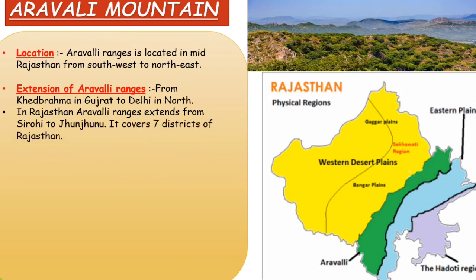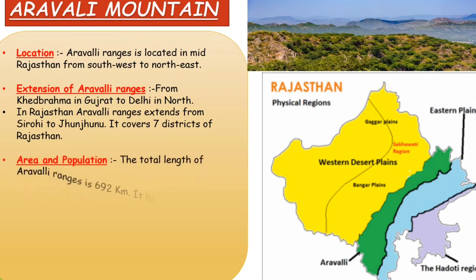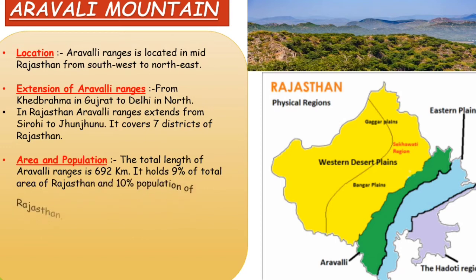The Aravalli Mountain Range in Rajasthan runs from Sirohi to Jhunjhunu and covers seven districts. Area and Population: the total length of the Aravalli Range is 692 kilometers. It holds 9% of the total area of Rajasthan, and 10% of the population of Rajasthan resides here.